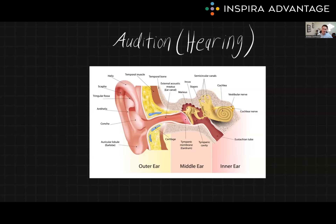Hearing is the sense that allows us to perceive sounds and understand speech. It is a complex process that involves different structures and pathways within the ear and the brain. In this video, we'll discuss the anatomy of the ear, the process of hearing, and the auditory pathway.